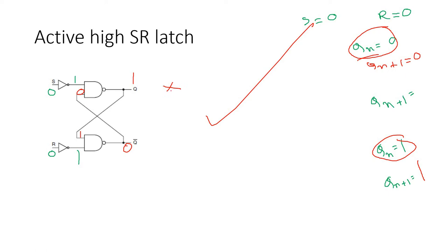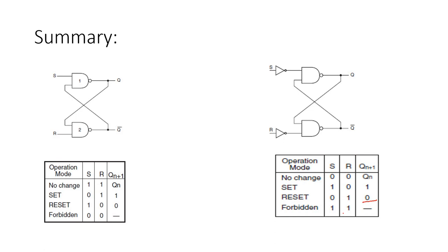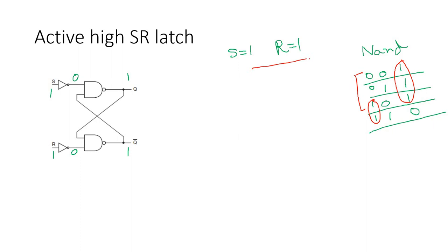To summarize: in the active low SR latch, when S=1, Q(N+1)=0 and when R=1, Q(N+1)=1 — the reverse of normal convention. But for this active high SR latch, if S=0 and R=0, Q(N+1)=Q(N) (no change). If S=1 and R=0, Q(N+1)=1 (set). If S=0 and R=1, Q(N+1)=0 (reset). If S=1 and R=1, both Q and Q̄ become 1 simultaneously — the forbidden region.